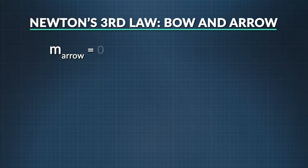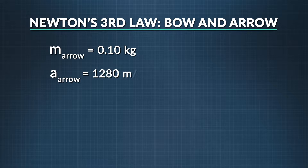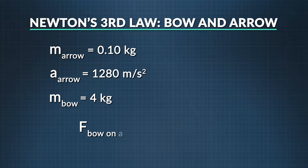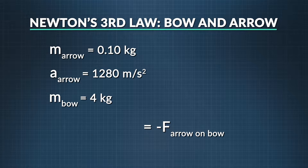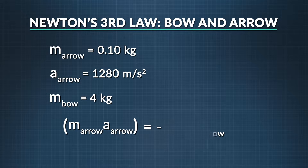Let's figure out how much the bow will accelerate back as the arrow is launched forward into the air. The arrow has a mass of 0.10 kilograms with an average rate of acceleration of 1,280 meters per second squared. The mass of the bow is 4 kilograms. The bow exerts a force on the arrow as it is fired in the positive x direction. According to Newton's third law, the bow will also experience a force from the arrow of equal magnitude in the negative x direction.